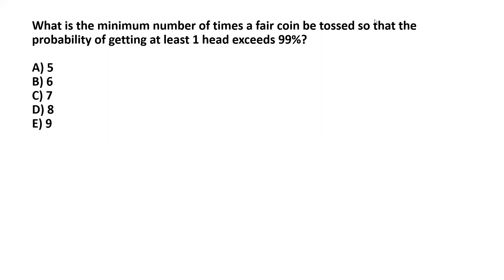What is the minimum number of times a fair coin must be tossed so that the probability of getting at least one head exceeds 99%? For a fair coin, the probability of obtaining a head or a tail in a single toss are equal, and each of those probabilities is equal to one half.